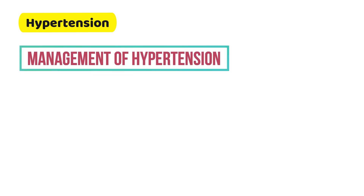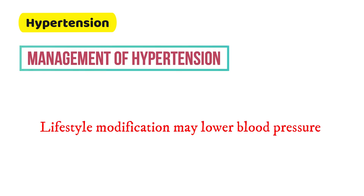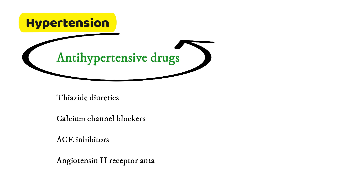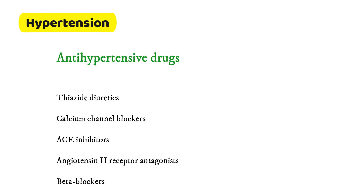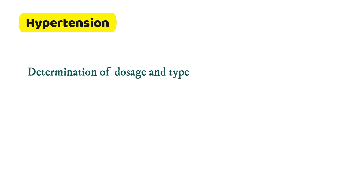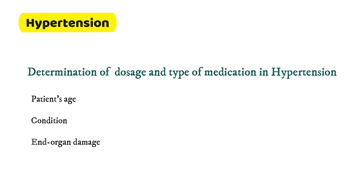Management of hypertension begins with lifestyle modification, followed by antihypertensive drugs. Commonly used drug classes include thiazide diuretics, calcium channel blockers, ACE inhibitors, angiotensin 2 receptor antagonists, and beta blockers. The patient's age, condition, and end-organ damage play an important part in determining the dose and type of medication.